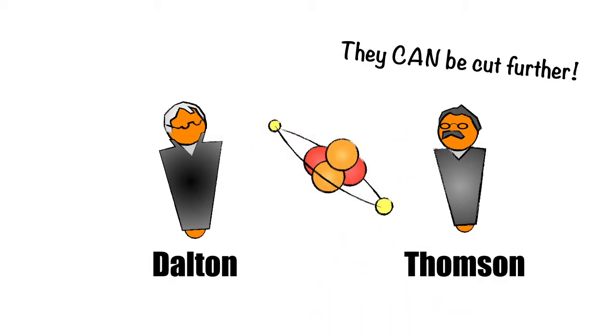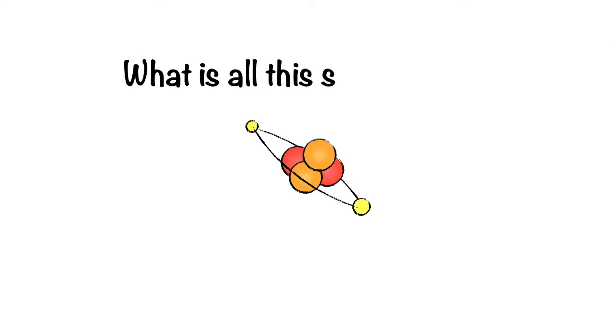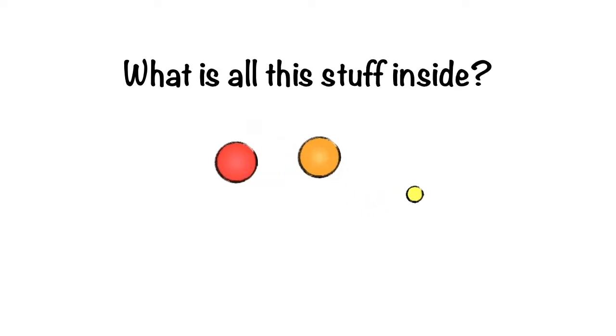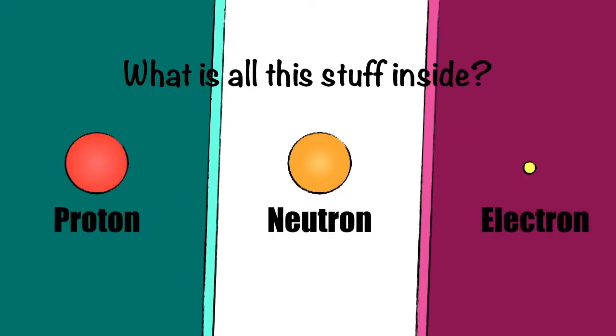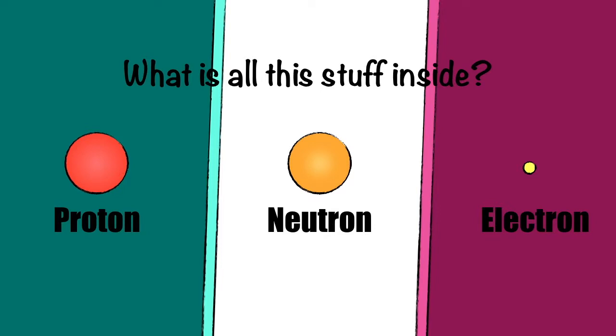Now we know that atoms can be further divided. The pieces of an atom are protons, neutrons, and electrons, but how does each piece influence the functionality of an atom and the overall material that it makes up? Let's take a look at the proton first.